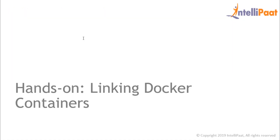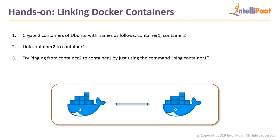So that was about linking containers, and we did the hands-on as well. To summarize: we created two Ubuntu containers named container one and container two, we linked container two to container one, and we tried pinging from container two to container one using ping container1 — successfully getting a response. We also saw that when containers are not linked, the ping fails with a 'name not known' error. That's it for today's session — have a great day ahead, goodbye!